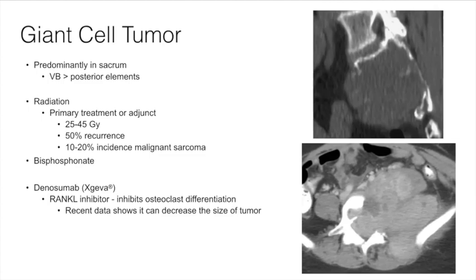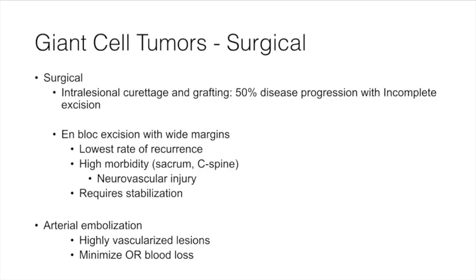Radiation for giant cell tumors is debatable given a high rate of recurrence and a 10–20% incidence of malignant sarcomatous transformation. Surgical treatment can include intralesional curettage and grafting, but there's a very high rate of disease progression with incomplete excision. The recommended treatment to minimize recurrence is en bloc excision with wide margins; however, in sacral lesions, this is challenging given proximity to neurovascular structures and important functional anatomy.